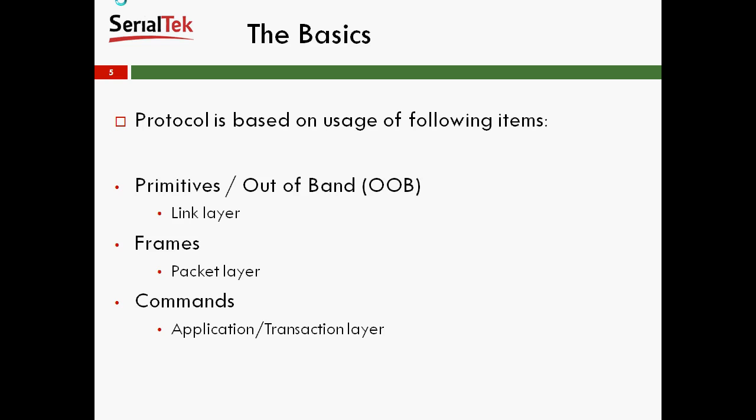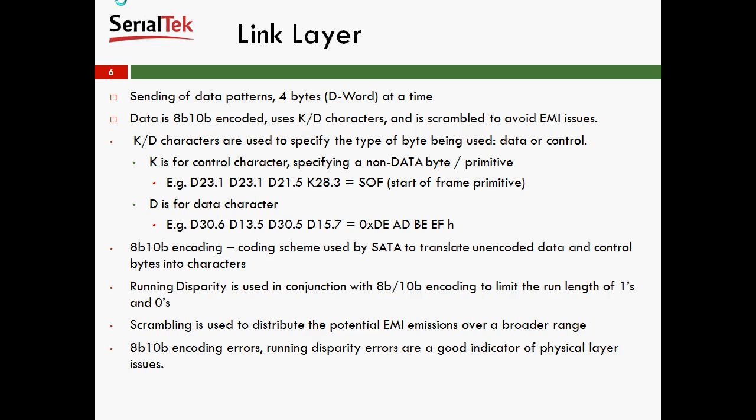The protocol is based on the following items: primitives and out-of-band, which is a link layer; frames, which is a packet layer; and commands, which is the application and transaction layer. The link layer is essentially sending data patterns four bytes, or what we'll call a D-Word, at a time. The data is 8B/10B encoded and uses K and D characters, and is scrambled to avoid EMI issues. K and D characters are used to specify the type of byte being used — data or control.